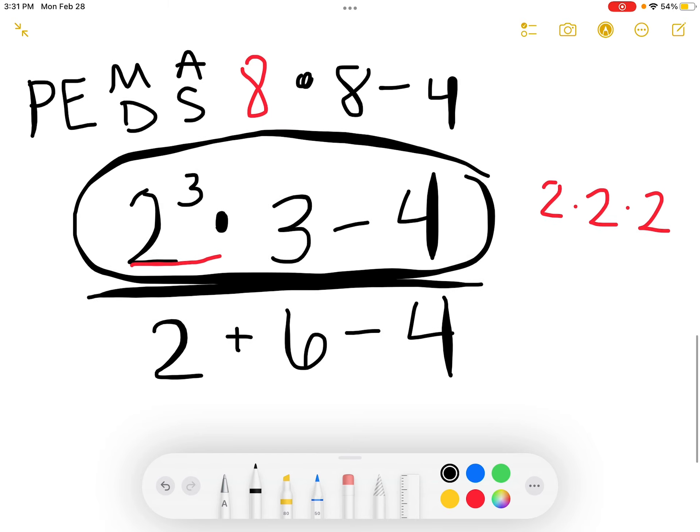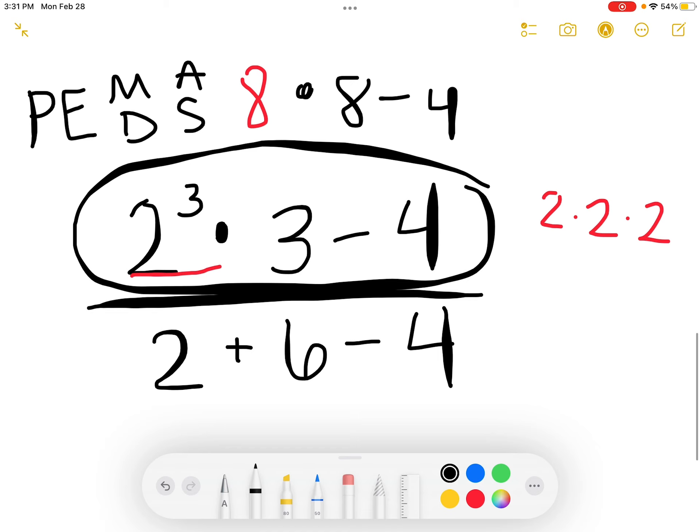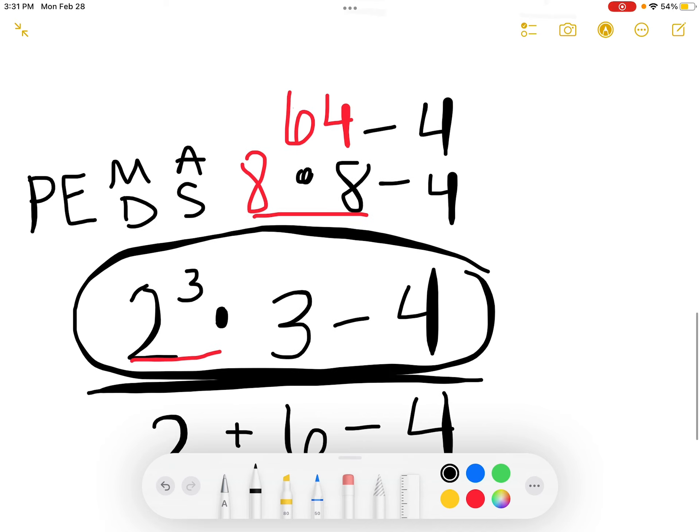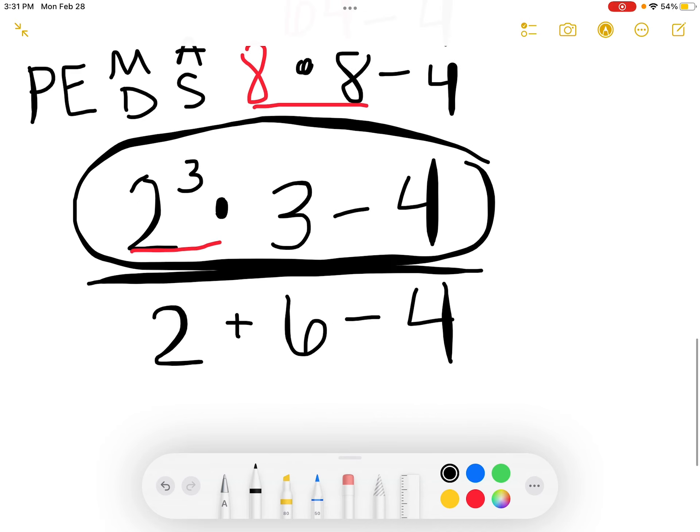Next, I have multiplication or subtraction. If I'm following order of operations, I would take care of the multiplication first. 8 times 3 is 24. And we still have the minus 4. 24 minus 4 gives us a final answer of 20 for the top part of our fraction. I'm going to take that 20 and just rewrite it over here so I can see it a little bit easier. That's the top number in our fraction.